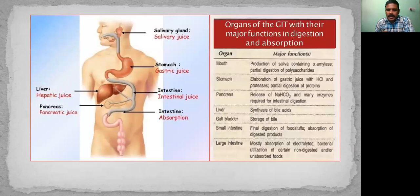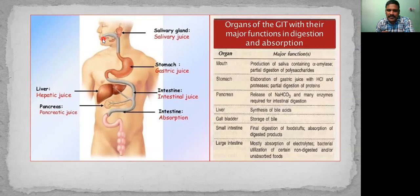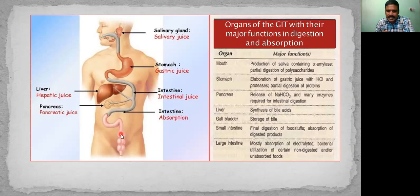Extracellular digestion takes place in the digestive system. In this slide, you can see the digestive system of human beings. The digestive system starts with the mouth and ends with the anus. This tube-like structure in between is called the gastrointestinal system, gastrointestinal tract, or GIT. Various parts are there like mouth, stomach, pancreas, liver, gallbladder, small intestine and large intestine. Pancreas, liver and gallbladder are glands which help in the process of digestion.